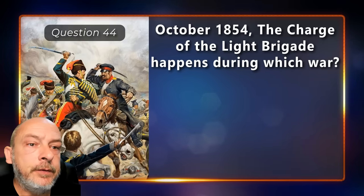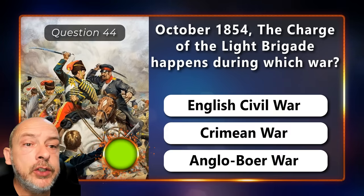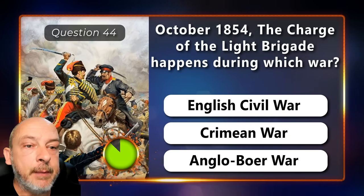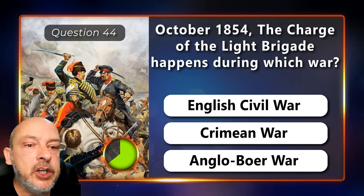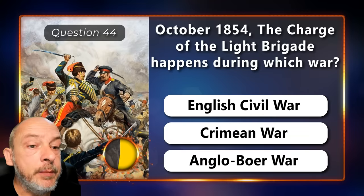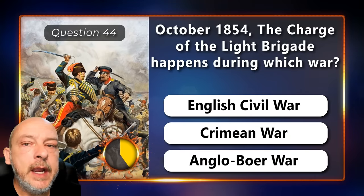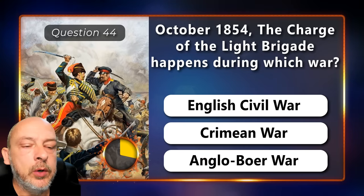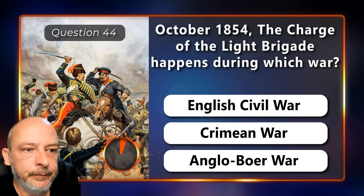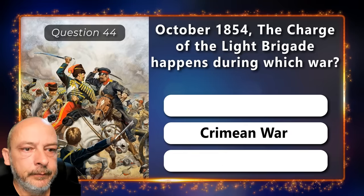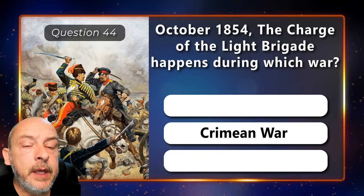October 1854: the Charge of the Light Brigade happens during which war — the English Civil War, the Crimean War, or the Anglo-Boer War? The Crimean War.